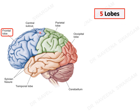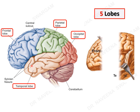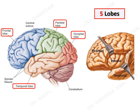The five lobes are: anteriorly the frontal lobe, the middle parietal lobe, posteriorly the occipital lobe, and inferiorly the temporal lobe. Between the frontal and temporal lobes there lies the insular lobe, also known as the hidden cortex of the cerebrum.